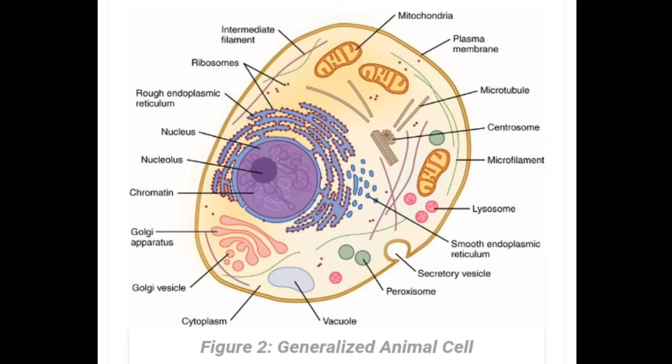Now let's look at the functions of vacuoles. Vacuoles help provide turgidity and rigidity to the cell. They act as a storehouse for pigments, waste products, as well as useful minerals and salts. In unicellular organisms like amoeba, food particles captured by pseudopodia are engulfed in the vacuole, which is called the food vacuole.